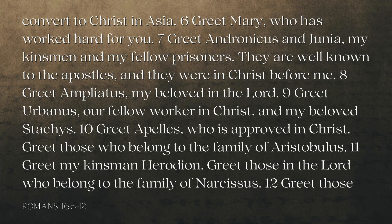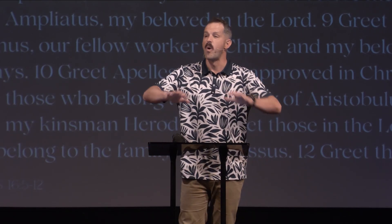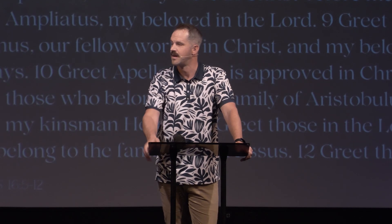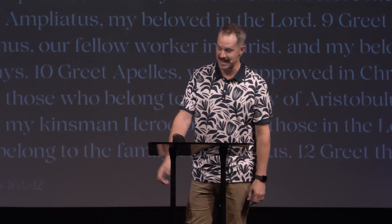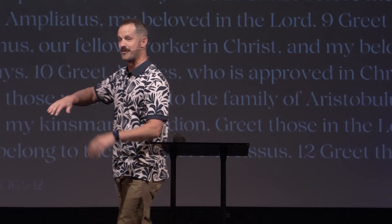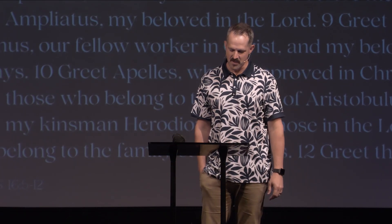Verse 7: 'Greet Andronicus and Junia, my kinsmen and my fellow prisoners. They are well known to the apostles, and they were in Christ before me.' Most scholars believe them to have been another married couple — missionaries, actually. Paul says their reputation precedes them: well known among the apostles. He points out they had been imprisoned for their faith, like Paul, but they were believers before Paul. He's saying, 'These two have been following Christ longer than I have. They were in jail for Jesus, just like me, but they've been following him longer.'